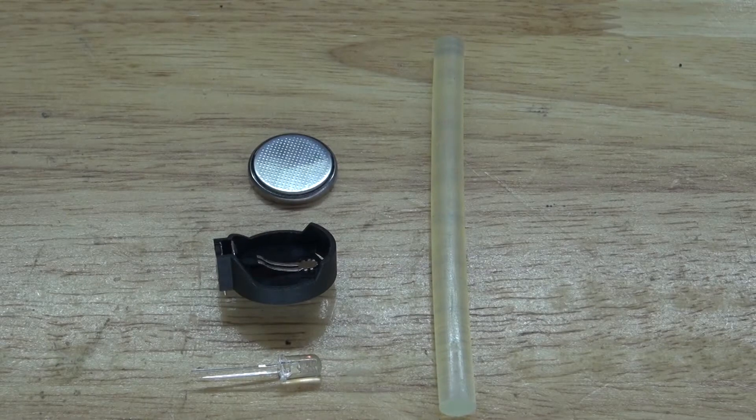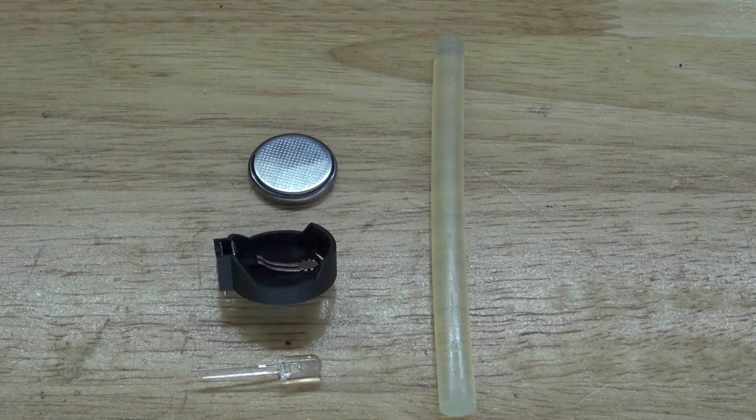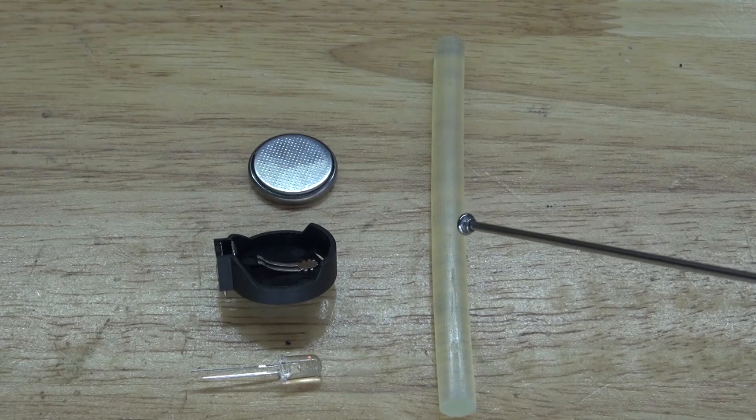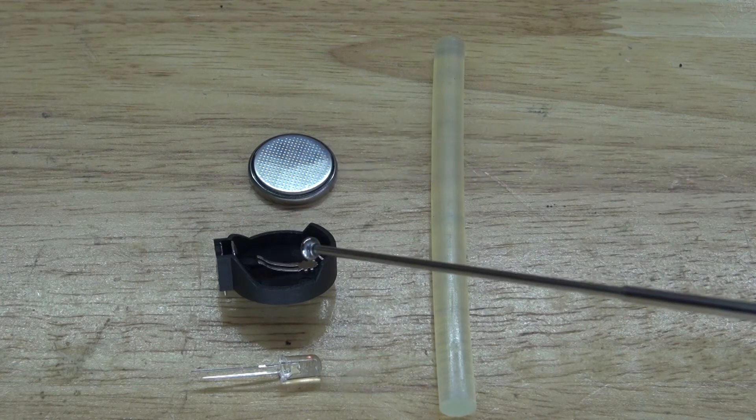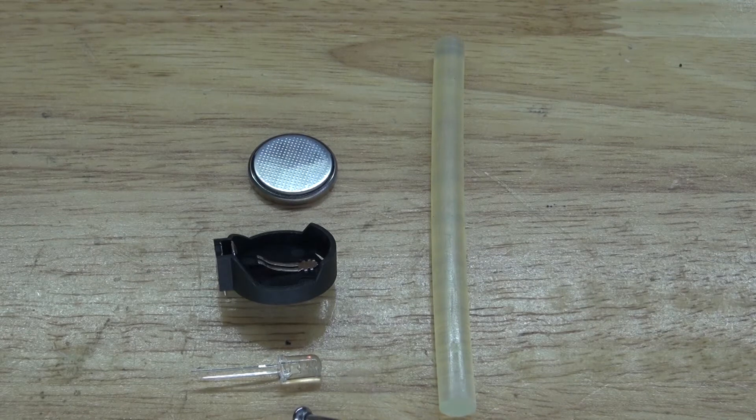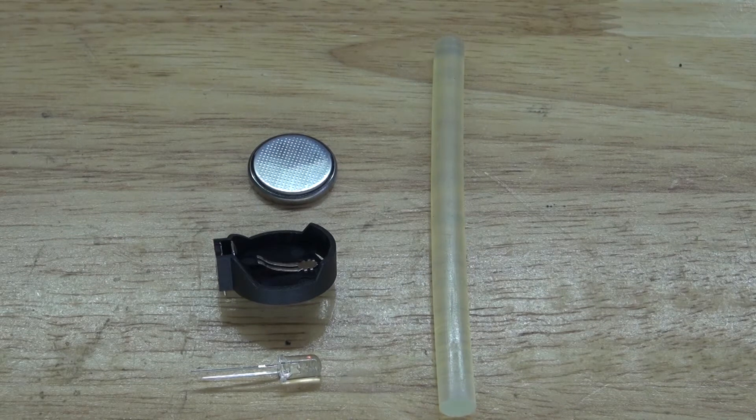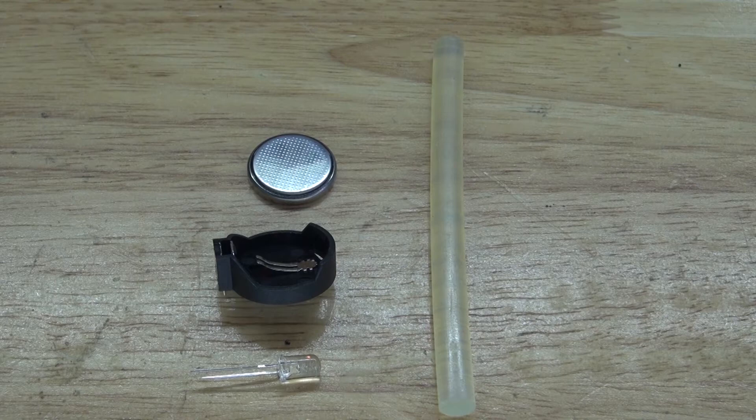And these are the items that you're going to need to make for this project. The items you're going to need is a glue stick, a 3-volt button cell battery, 3-volt button cell battery holder, and an LED of the color of choice. Now let's go to assemble this project and let's get started.